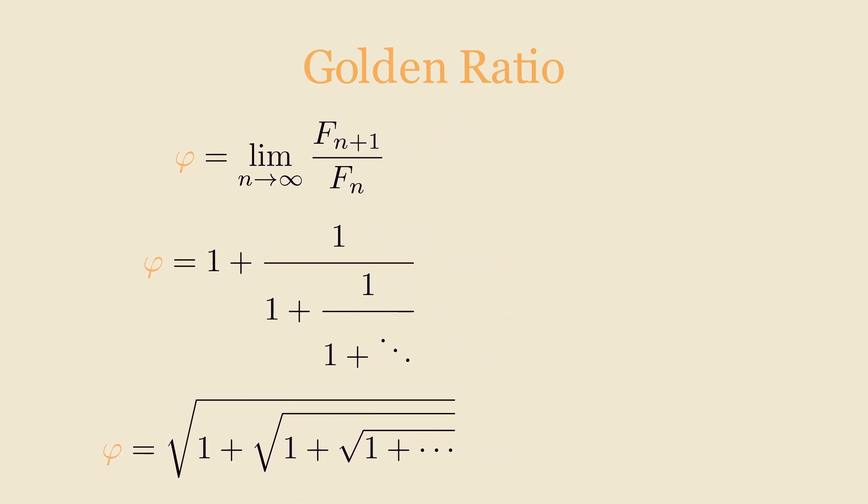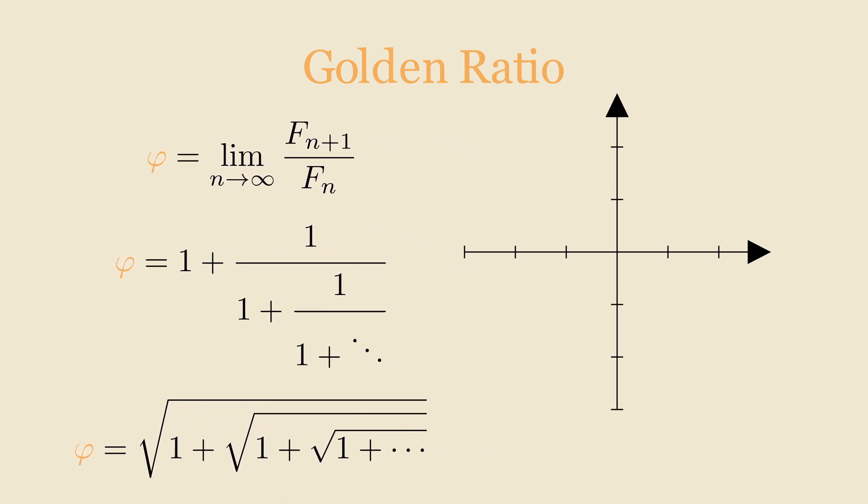So why does the golden ratio show up in all these places? Well, it has to do with this specific polynomial, x squared minus x minus 1. It turns out that anything that relates to this polynomial will also have a strong connection to the golden ratio.